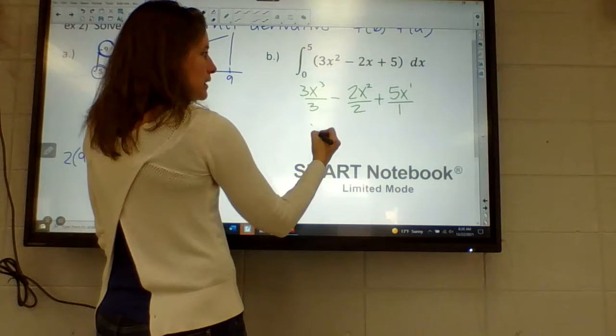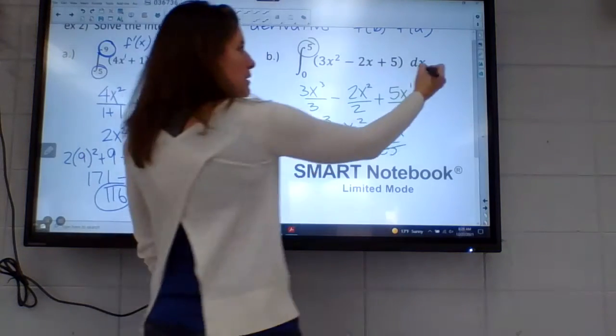So I have to do F(5) minus F(0). But F(0) isn't a thing because it is just zero. These are all going to become zero, so I can just substitute the five in. I get 125 minus 25 plus 25. These cancel, so this ends up being 125.